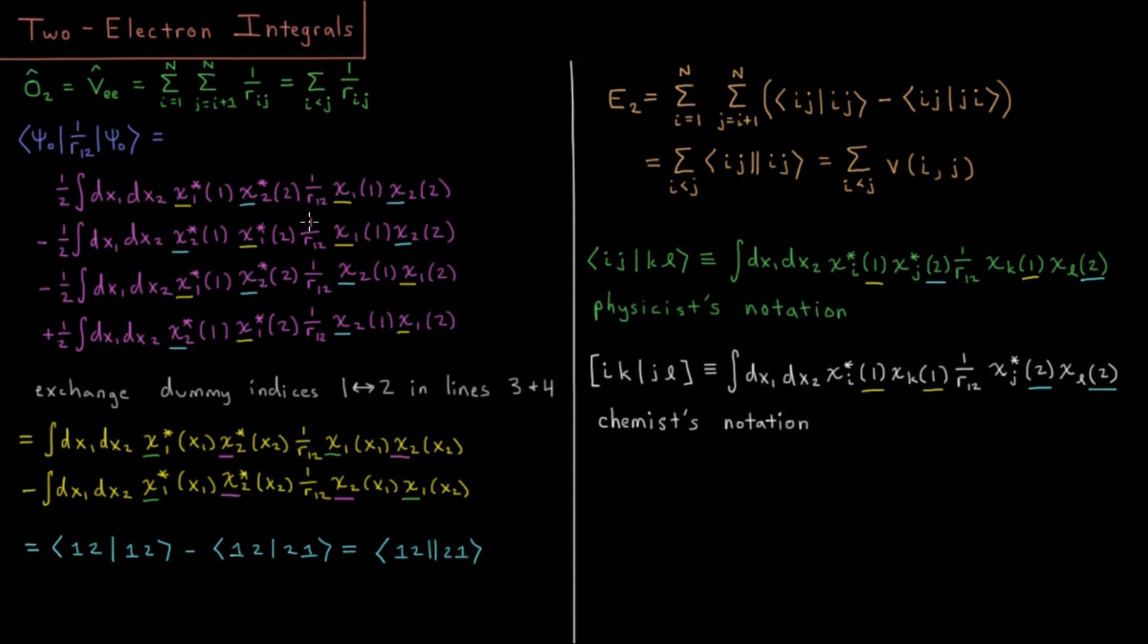But now there's no further simplification that can be done at this point because this one-over-r12 operator does depend on the coordinates of electron one and electron two. So this is basically as simple as we can make it at this point. Just note that the ones and twos stay the same in these columns here. These highlights underneath indicate where the chi ones and chi twos are changing.